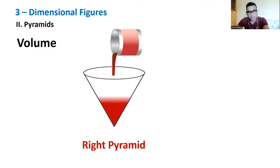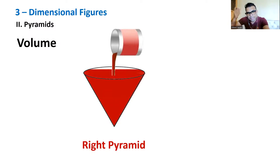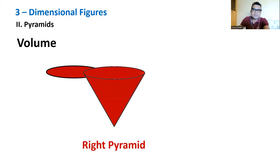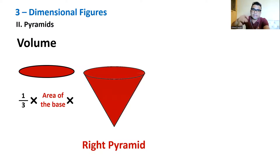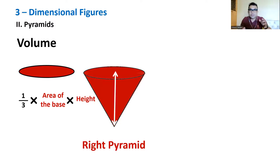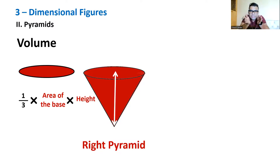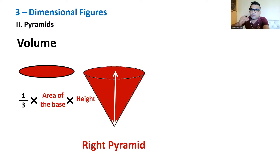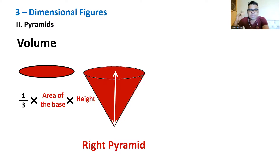For a right pyramid, volume = (1/3) × area of the base × height. The factor of 1/3 is there because the base area is not distributed uniformly up to height h — the base area constantly reduces as you go up. In a prism, base area was uniform across height h, but in a pyramid it is not, hence the 1/3 factor.